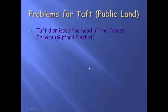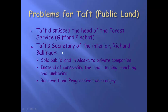Some more problems for Taft. If you can remember, what was Teddy Roosevelt doing with public lands? Conserving them. Well, what does Taft do? He fired Gifford Pinchot, one of Teddy's buddies. And then Taft's Secretary of the Interior, Richard Ballinger, sold a whole bunch of land to private companies. What did those private companies do with that land? They weren't conserving it — they started cutting down trees, digging for oil, digging for gold and silver, raising cattle. And Roosevelt and the progressives were so angry.